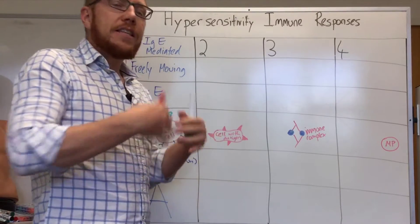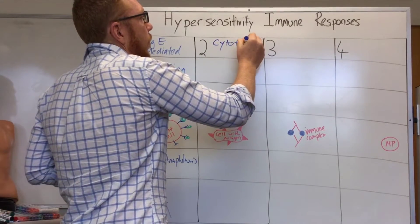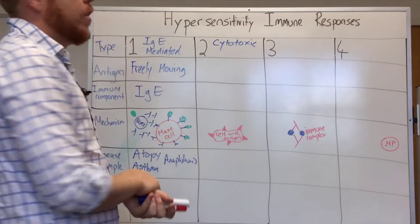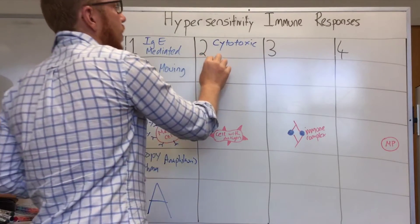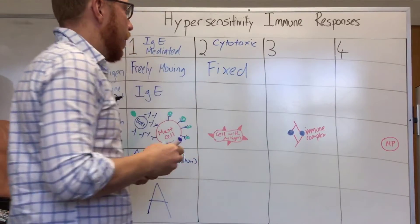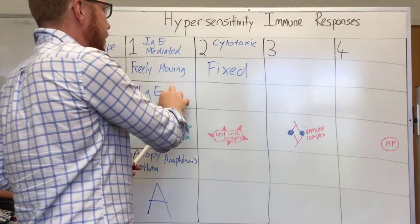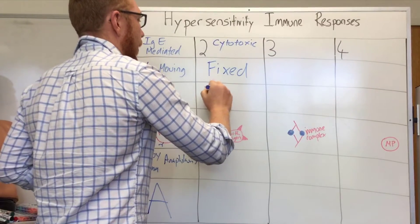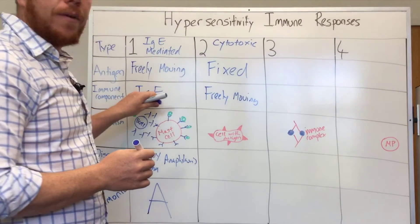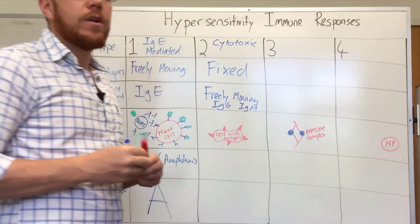Type 2, this type is called cytotoxic. You could probably guess by that name the cell would die in this case. When you compare it to type 1 where we had a freely moving antigen, in this case the antigen is fixed on the cell. Whereas the immune component in type 1 was IgE and that was the fixed part, in this type it's freely moving. So the antibody is freely moving. It's not a type E in this case, it's a type IgG or IgM.